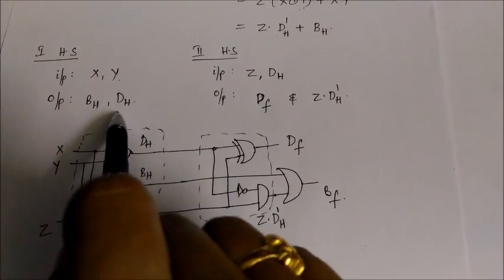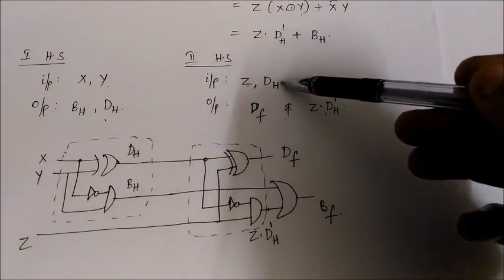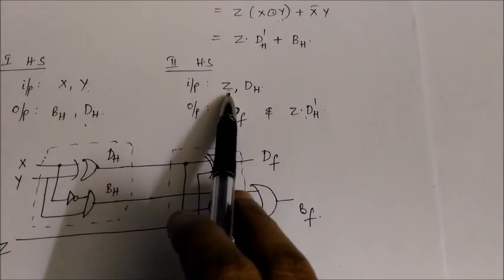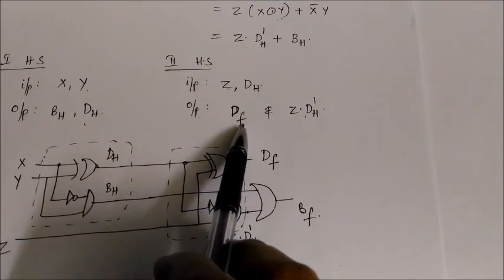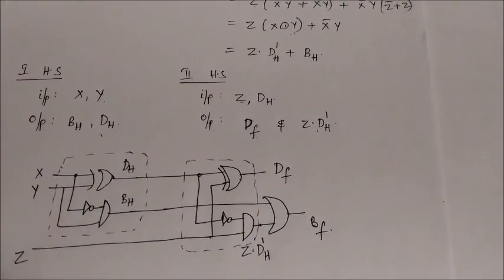The second half subtractor input will have z and dh. So in such a case, output will be dh XOR z, which is nothing but df, and will have z into dh bar as the second output.